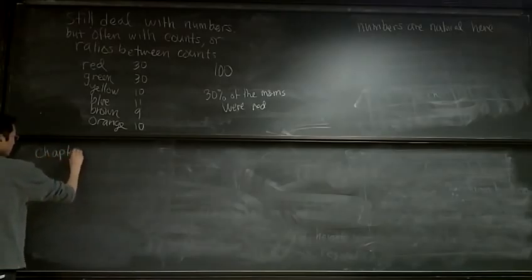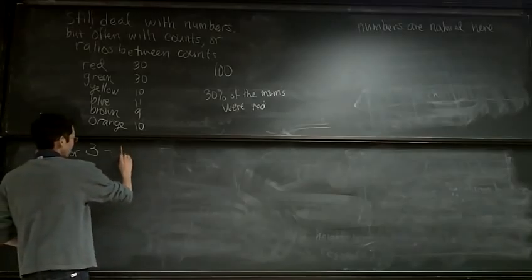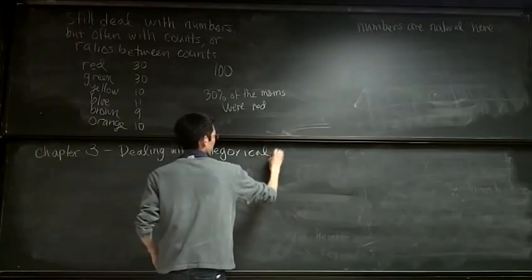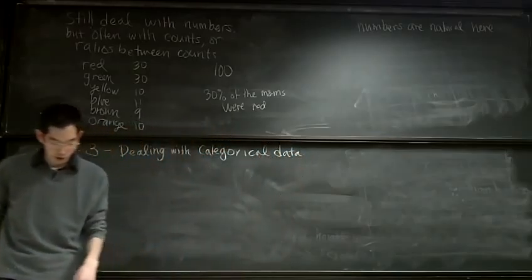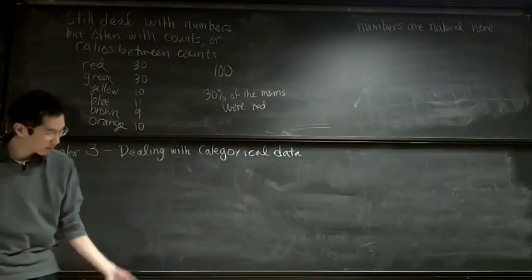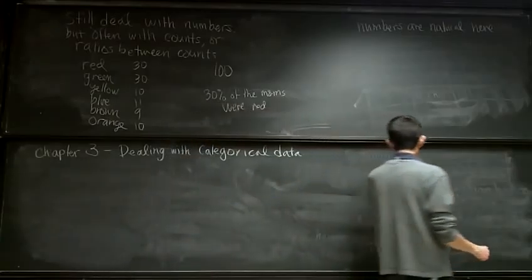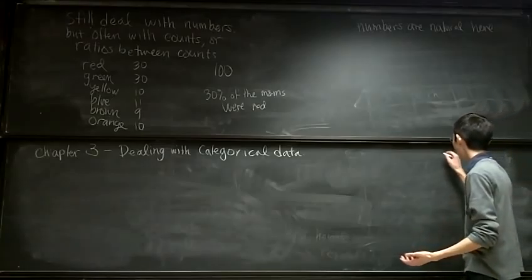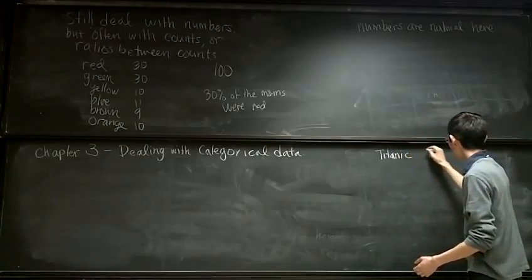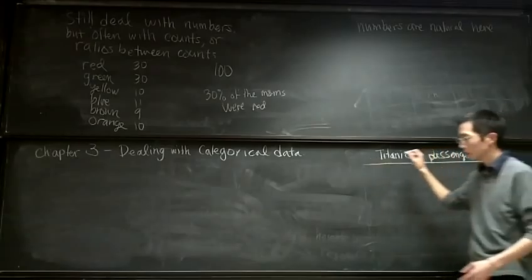Okay, so Chapter 3 — this is all about displaying and describing categorical data. The data we're going to be using throughout the rest of this chapter comes from the Titanic — Titanic passenger data.